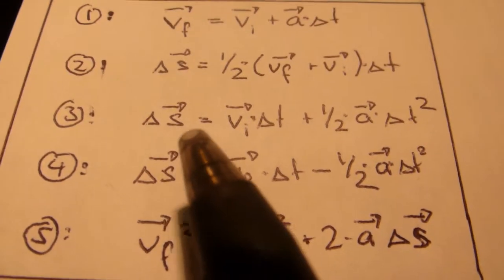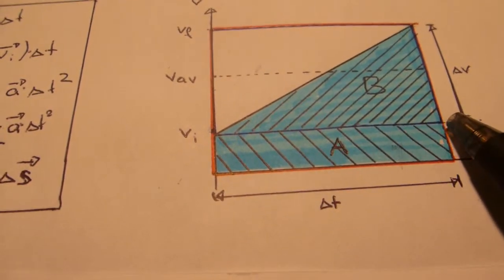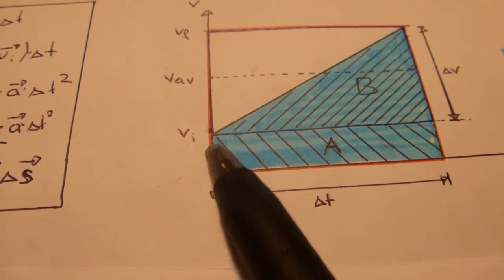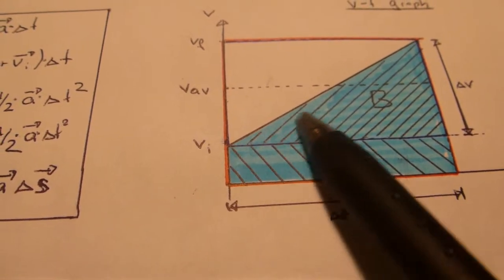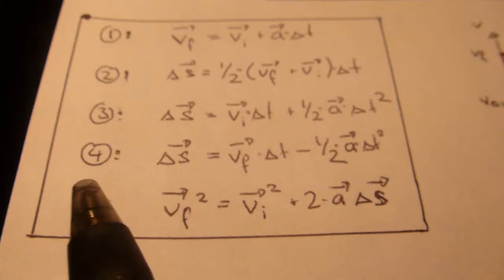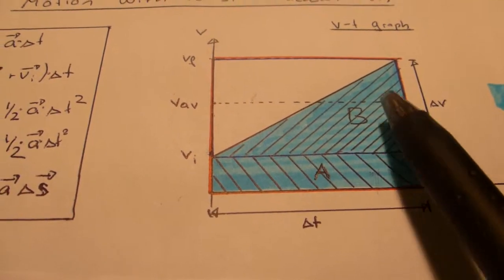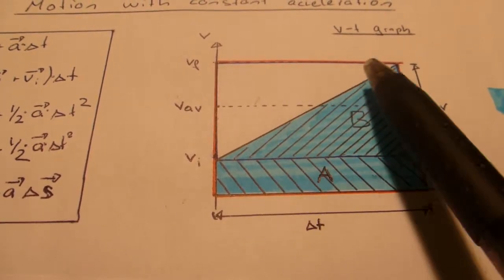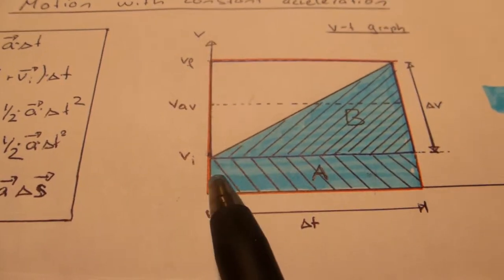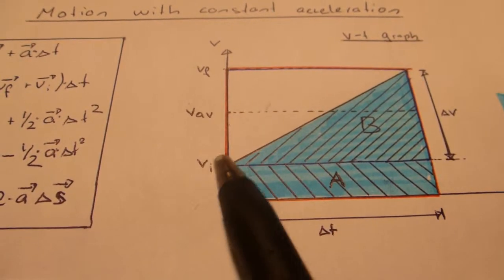You see the difference in number three. We took that small square down here A and we added B to find the complete area. In number four, we start with the big red square or shape and we subtract the white triangle.